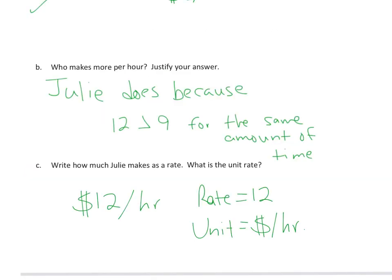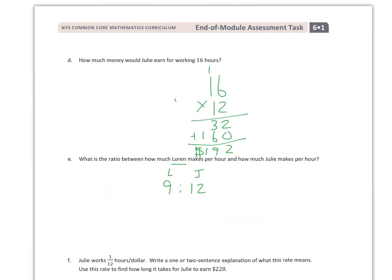For parts B and C, you pretty much already have this as well. Julie makes more because 12 is greater than 9 for the same amount of time — for 1 hour you make $12, which is better than $9. Her rate is 12, and the unit is dollars per hour, because we divided dollars by hours so hours became 1. For parts D and E: Julie makes $12 an hour, so for 16 hours multiply by $12 per hour — she makes $192. And the ratio between Lauren and Julie would be 9 to 12.